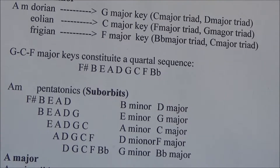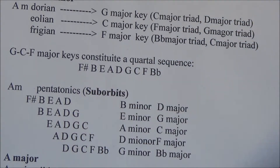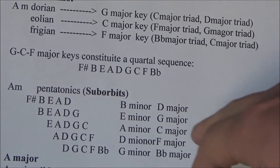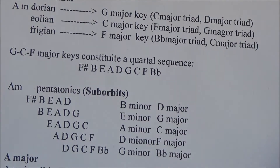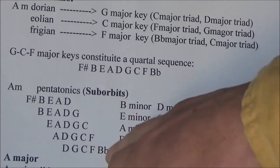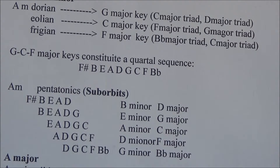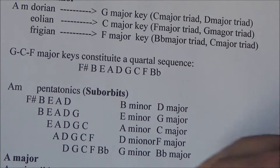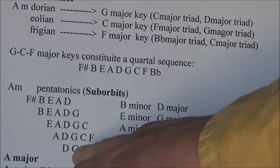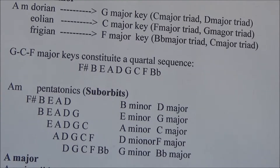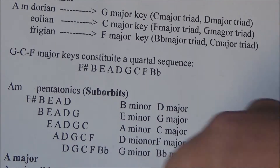B, A, D, G, C, F — another sub-sequence. D minor: D, G, C, F, B flat — G minor. These are further pentatonic groupings derived from dividing the quartal orbit.